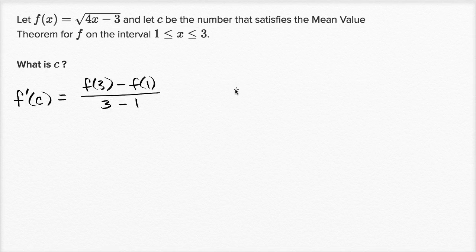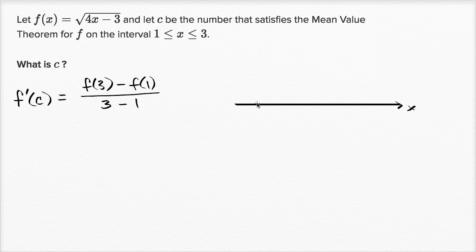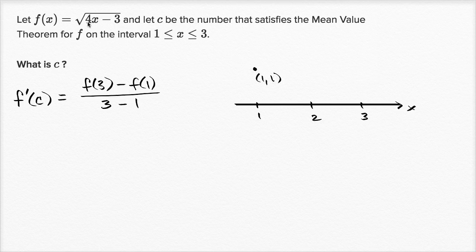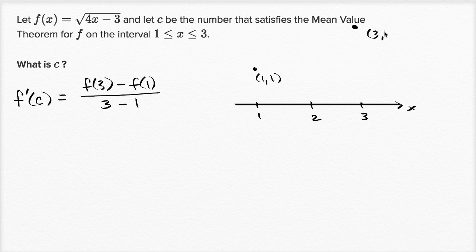If you think about what this means visually, it would look something like this. On the x-axis we have 1, 2, and 3. We have the point 1 comma f of 1, which evaluates to 1 comma 1. And then we have the point 3 comma — 4 times 3 is 12, minus 3 is 9, square root is 3 — so 3 comma 3.